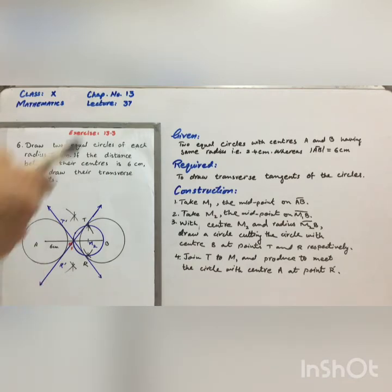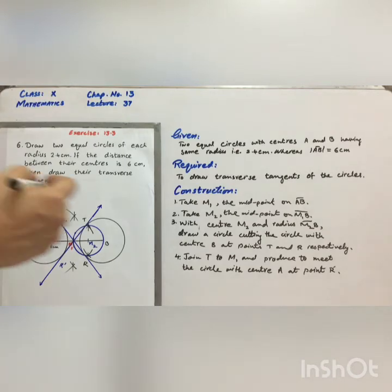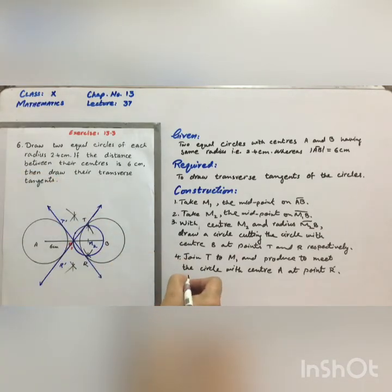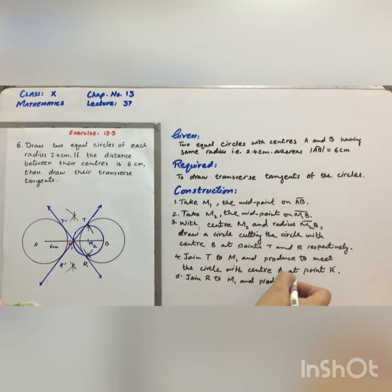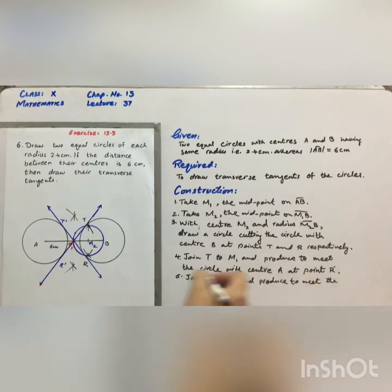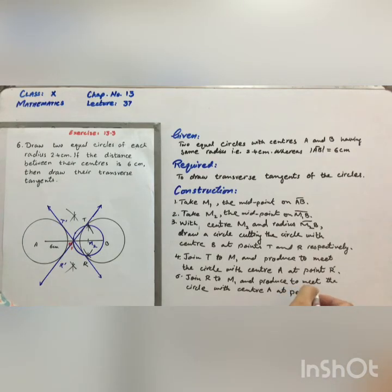Step number 5: join R to M1 and produce to meet the circle with center A at point T complement.